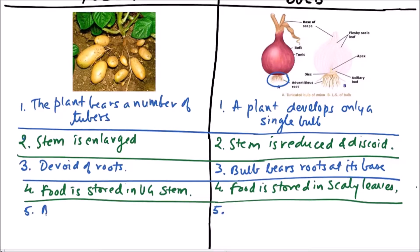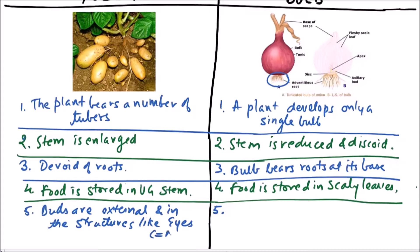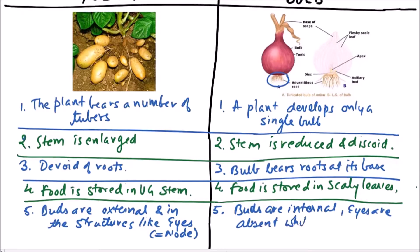In a tuber, buds are external and found in structures called eyes — these eyes represent nodes. In a bulb, buds are internal and eyes are absent, while the nodes are not conspicuous.